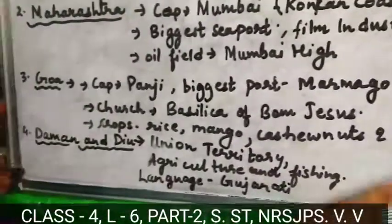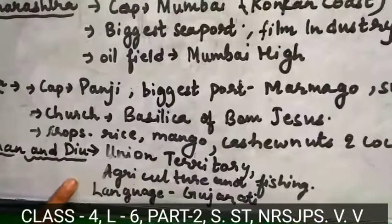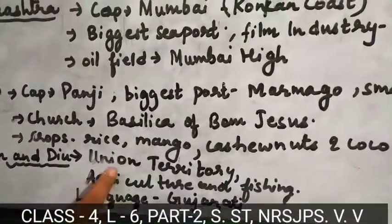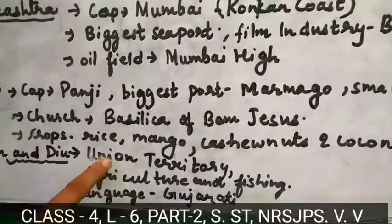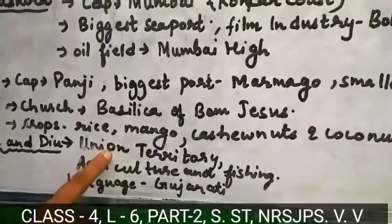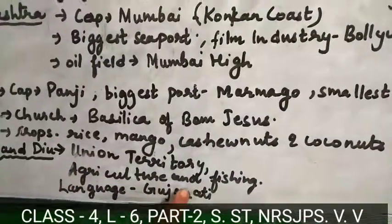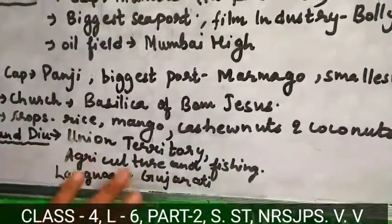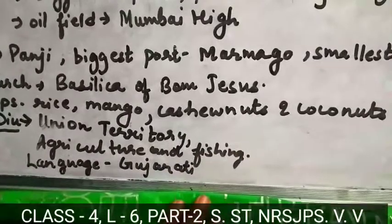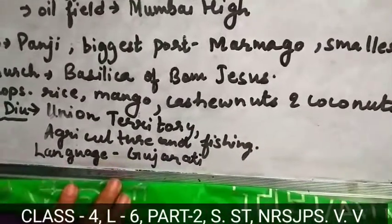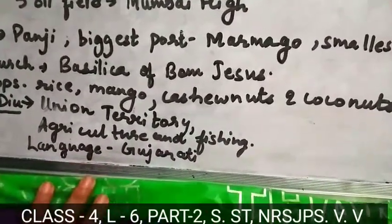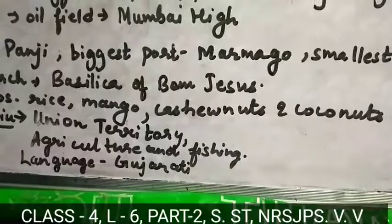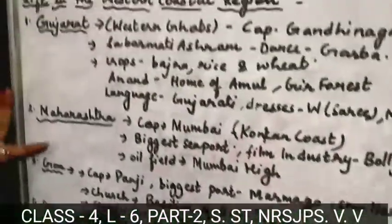Next we have to study about Daman and Diu. Daman and Diu is a union territory. It is known for its agriculture and fishing. The language people speak there is Gujarati.